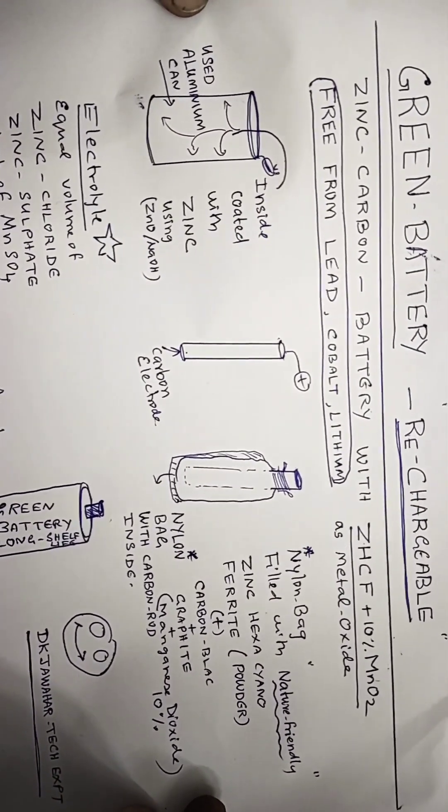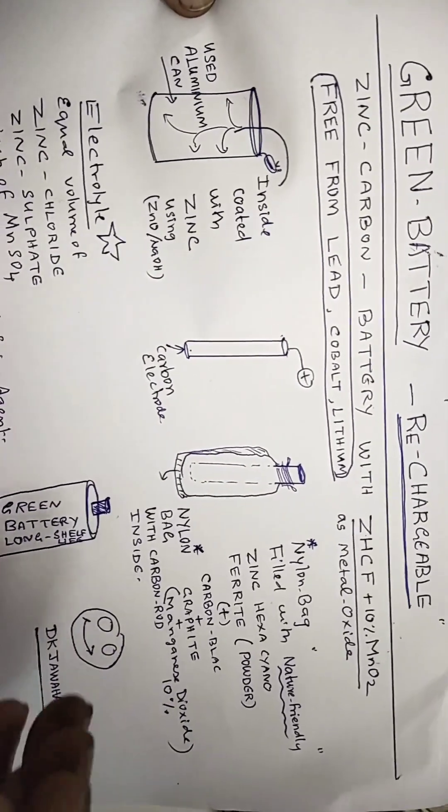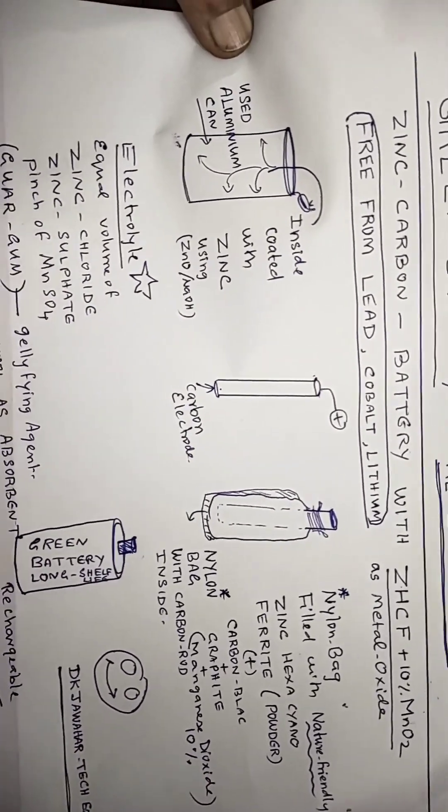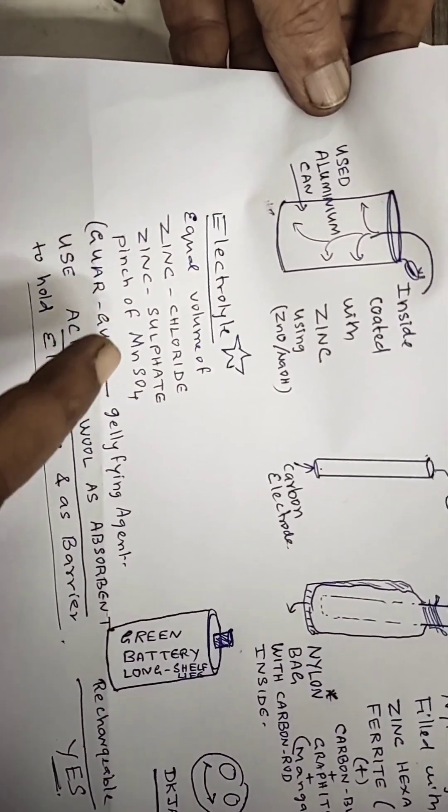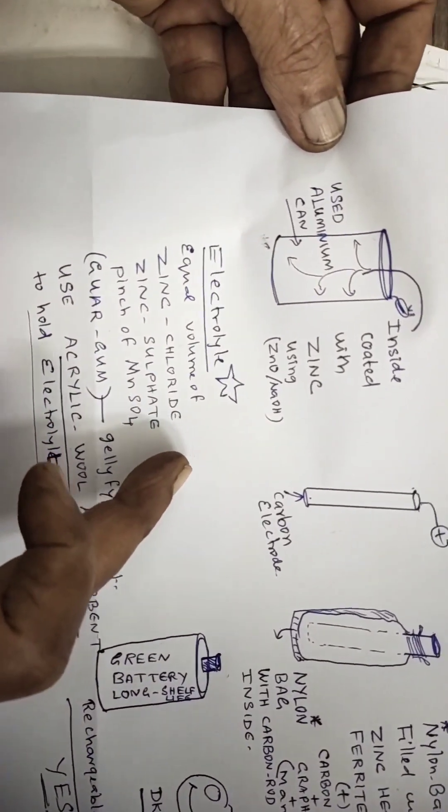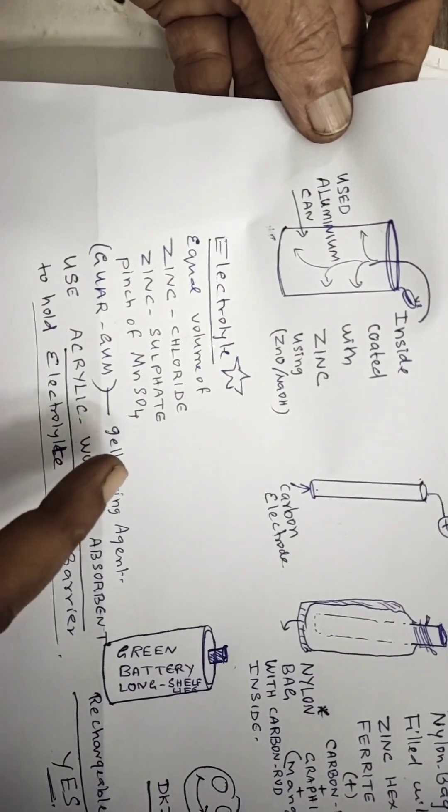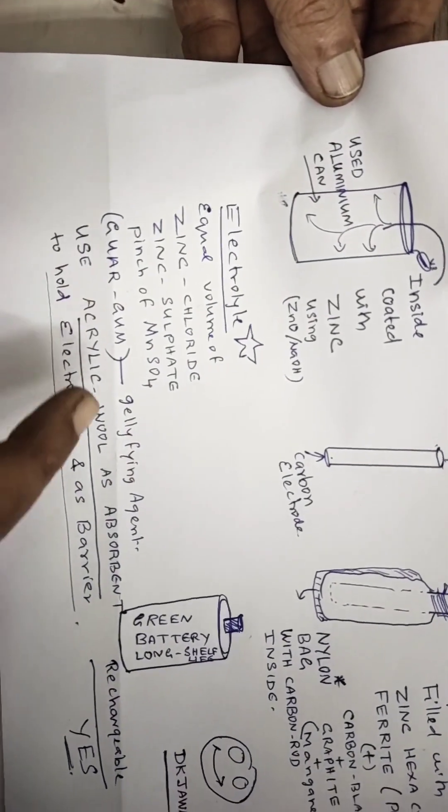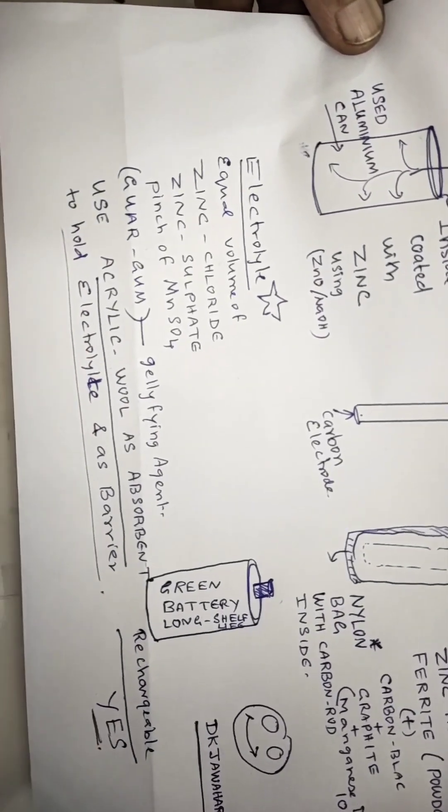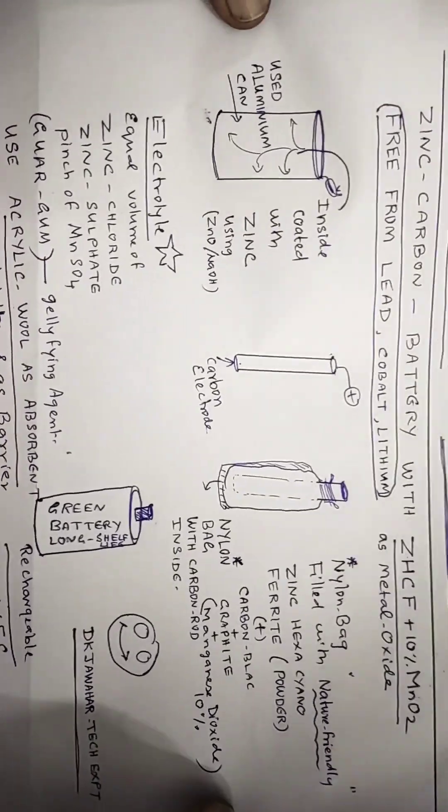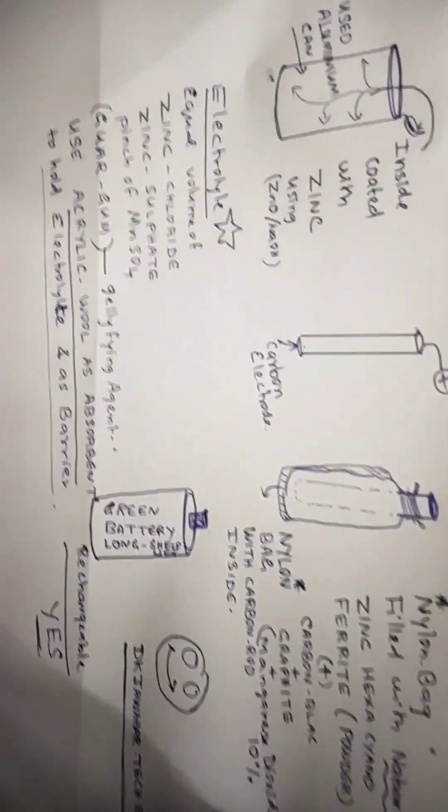This battery also functions very fine. It is rechargeable and the efficiency is so good. Even the motor runs so fine. You can see its flow of current. The electrolyte will be equal volume of zinc chloride and zinc sulfate, a pinch of manganese sulfate, and guar gum as a jellying agent. I am using acrylic wool as the barrier and absorbent. We will see how to prepare this step by step.